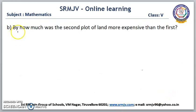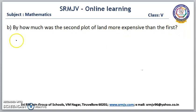The next question is: by how much was the second plot of land more expensive than the first plot? For this, we have to subtract the money spent for the first land from the money spent for the second land.